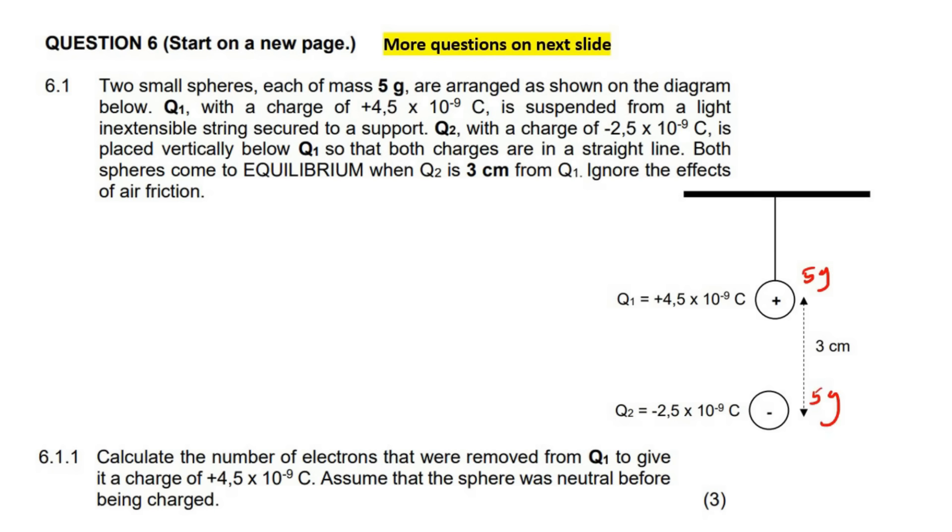Calculate the number of electrons that were removed from Q1 to give it a positive charge. Let's just talk about that a little bit. Let's pretend once upon a time there was a charge called Q1. Q1 was not positive or negative. We would say that charge Q1 was a neutral fellow.